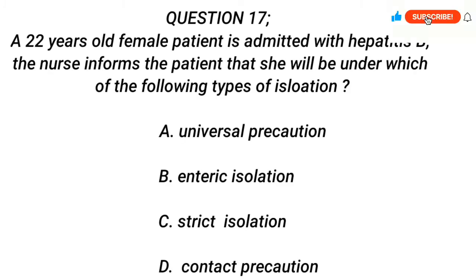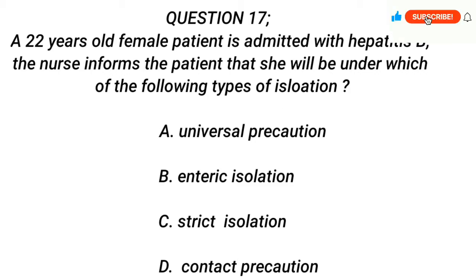Question 17. A 22-year-old female patient is admitted with hepatitis B. The nurse informs the patient that she will be under which of the following types of isolation? A. Universal Precautions. B. Enteric Isolation. C. Strict Isolation. D. Contact Precautions.